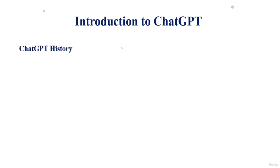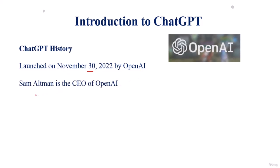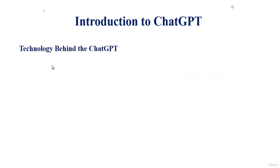In this class we'll discuss ChatGPT history — just a basic overview. ChatGPT is a product of OpenAI, the American artificial intelligence research laboratory. ChatGPT was launched on November 30, 2022 by OpenAI. Sam Altman, the CEO of OpenAI, is also the developer of ChatGPT. This is a very short history — you can read more about it from Wikipedia or other resources. If you have any confusion, you can discuss with me.